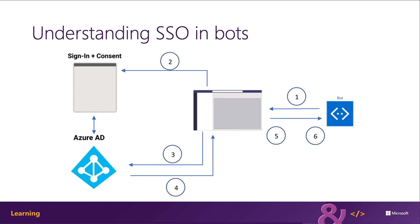The app must be installed in the personal scope for SSO support — not in a channel or a group chat where multiple people can authenticate. If the current user is using your bot application for the first time, a request prompt will be displayed asking the user to take action.